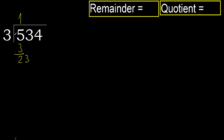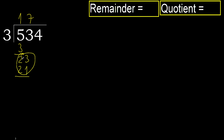23. 3 multiplied by 8 is 24 — 24 is greater. Multiply by 7: 3 multiplied by 7 is 21. It is not greater, ok. Subtract: 23 minus 21 equals 2. Next, bring down: 24.